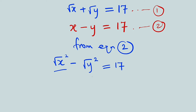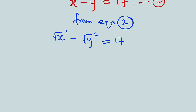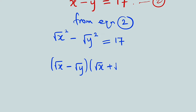But now since these are to the power of 2, we say there is a difference of two squares. And if there is a difference of two squares, we can express them as square root of x minus square root of y, then multiplied by square root of x plus square root of y, and this will be equal to 17.